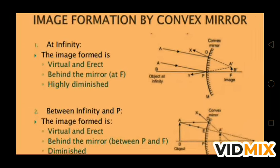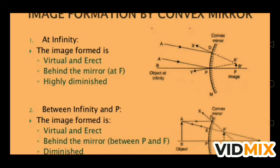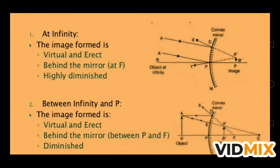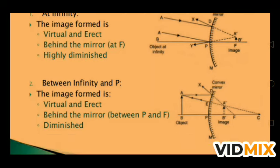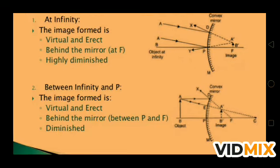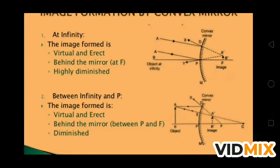Now, images formed by a convex mirror. There are two positions of the object — unlike the six for concave mirror. First: if the object is at infinity, the image formed is at focus, virtual, erect, behind the mirror, and highly diminished. Second: when the object is between infinity and pole — anywhere — the image is virtual, erect, behind the mirror, between focus and pole, and diminished. These are the two conditions of object position and image properties for a convex mirror.